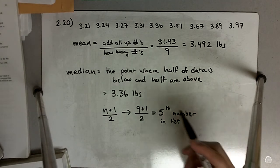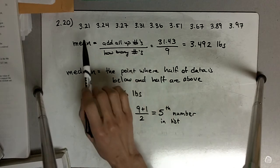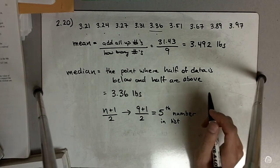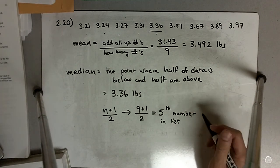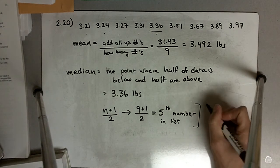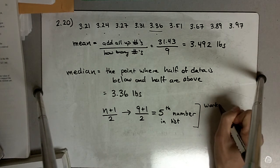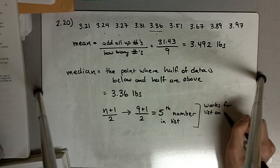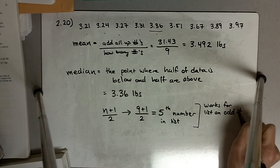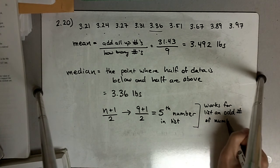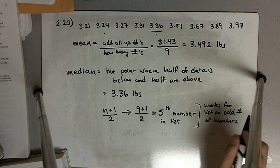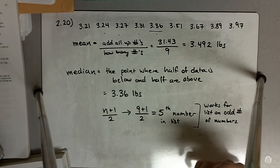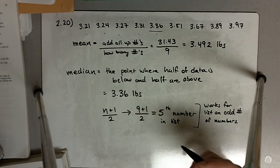It's very important that the list goes from smallest to largest. If we go to the fifth number — 1, 2, 3, 4, 5 — that's 3.36 pounds. I should note that this works for lists with an odd number of numbers. If you have an even number of numbers, the process of finding the median is different, and that will actually be another problem.